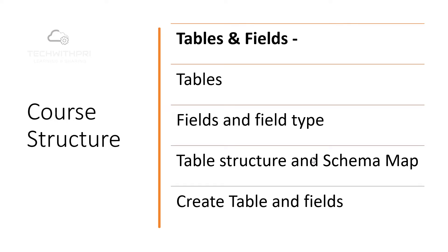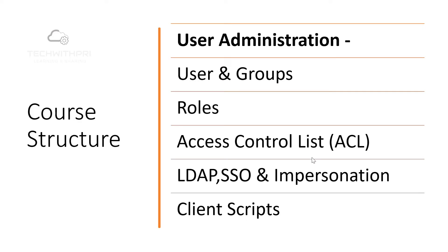Next we will cover tables and fields. In ServiceNow, every record is stored in a table, so tables are a huge part of the platform. We'll look at field types, table structure, schema map, and finally create tables and fields inside ServiceNow. Under user administration — which is very important — we will cover users, groups, assigning roles, access control lists (ACL), LDAP, SSO, and one of my favorites: the impersonation option. We'll end user administration with client scripts.